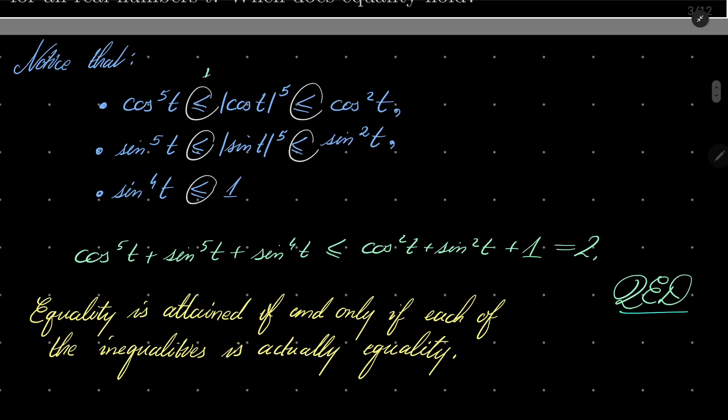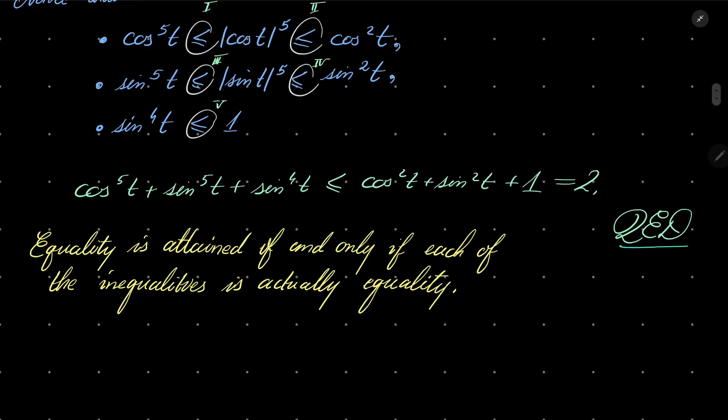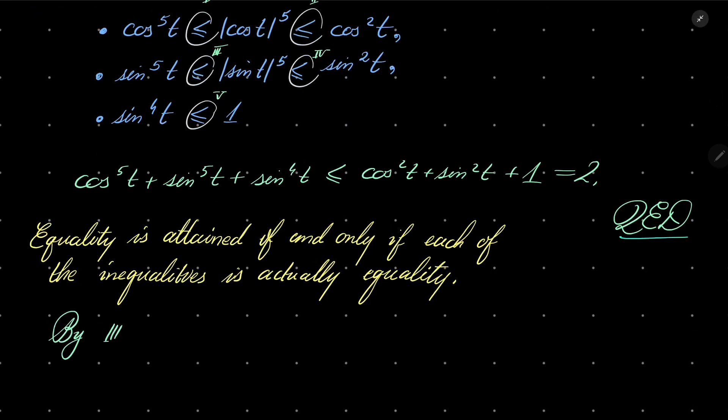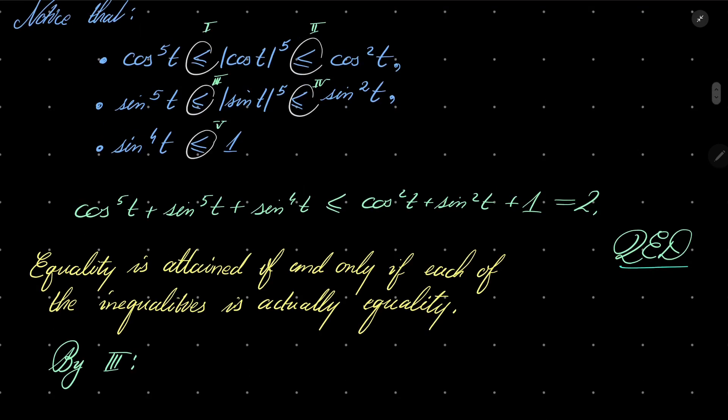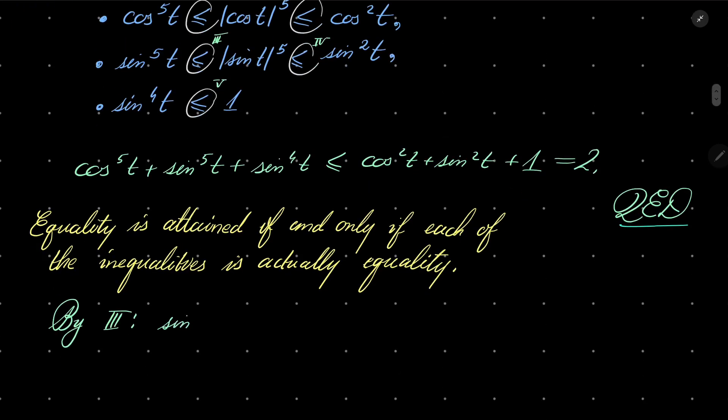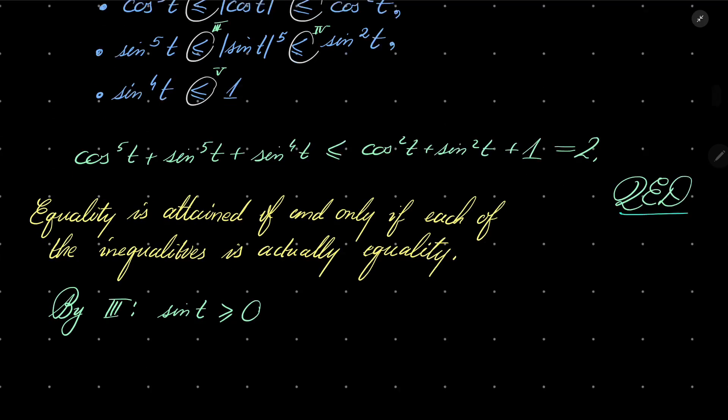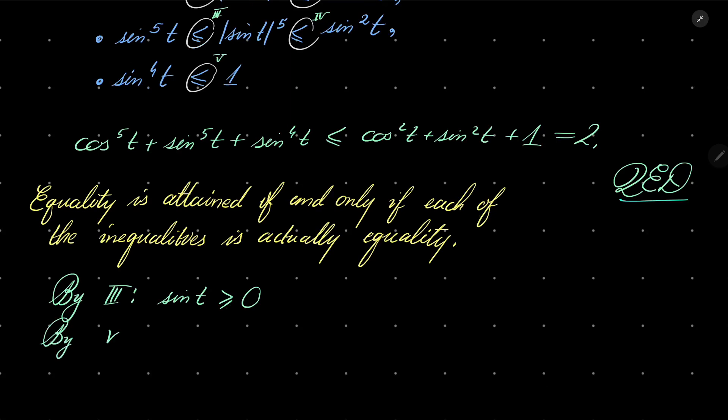First, I will mark them. I will mark 1, 2, 3, 4, 5. By 3, we see that sine of t must be greater than or equal 0, and by condition number 5, sine to the 4th power must be equal 1.